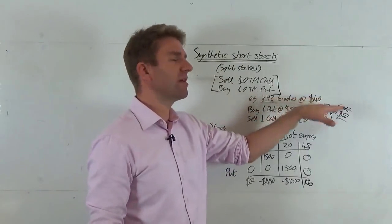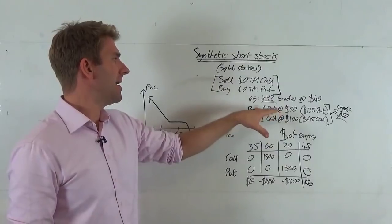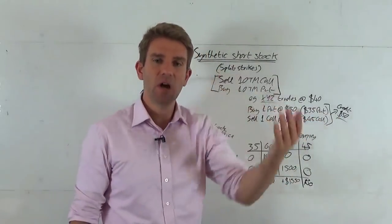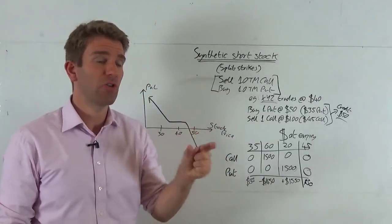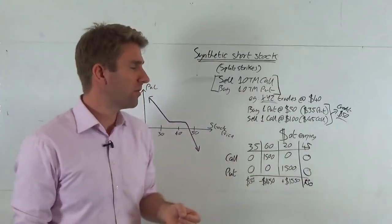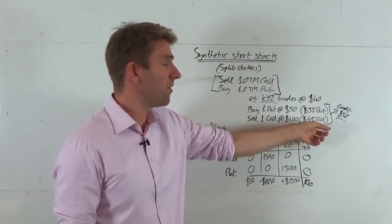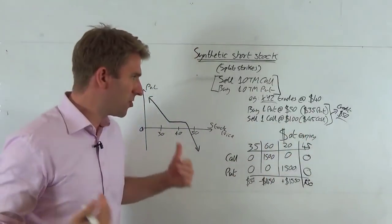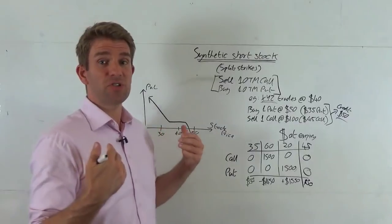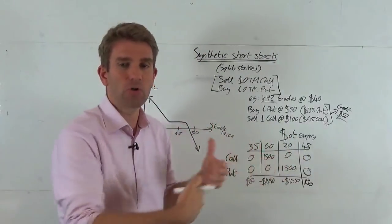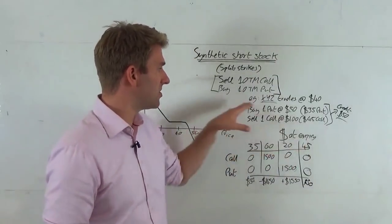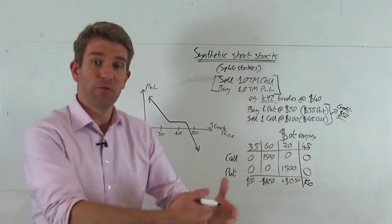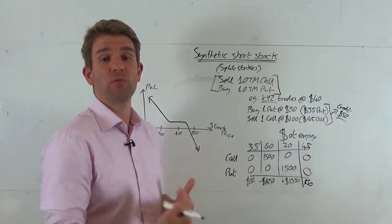So imagine XYZ is trading at $40. We buy an out-of-the-money put — in this case a $35 put — that costs us $50 (trading at 50 cents times 100 shares per contract). We also sell one $45 call, which is five dollars the other side of $40 — the split strike. That call brings in $100, but since we're selling it, we receive that premium. After paying $50 for the put, we net a $50 credit on the whole trade.